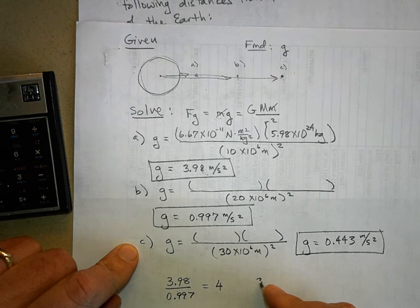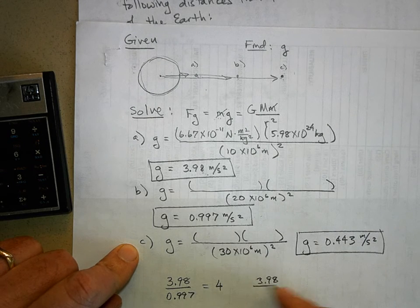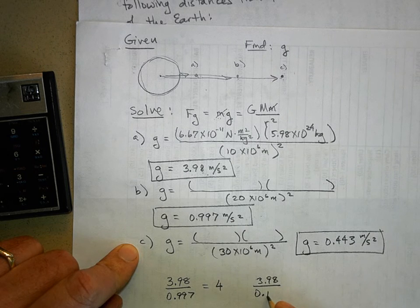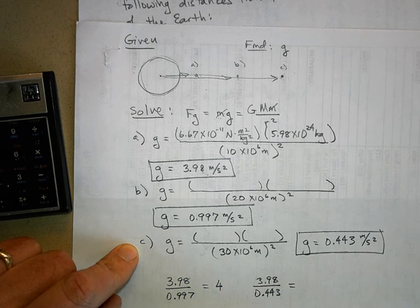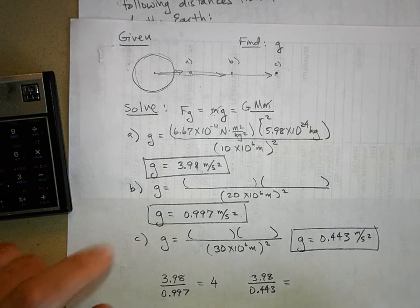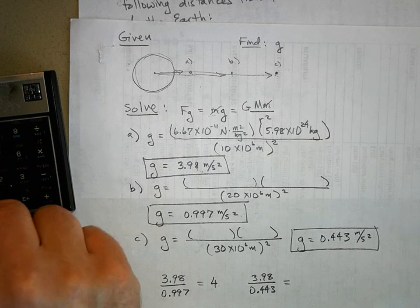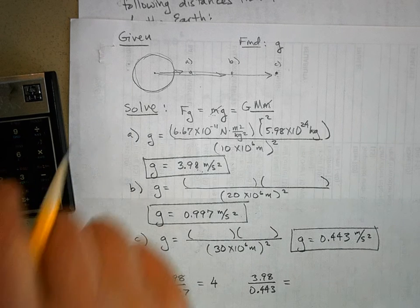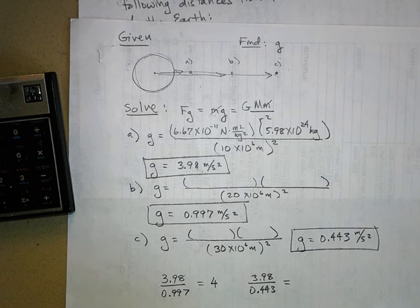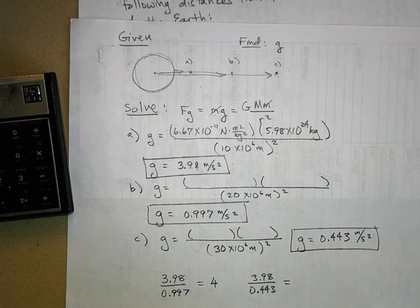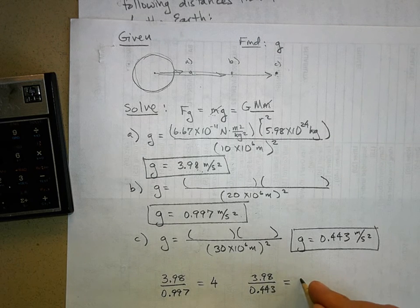For part C, take 3.98 and divide it by 0.443, and I get 8.98, but if I round it off, it's about 9.